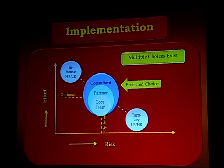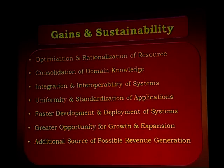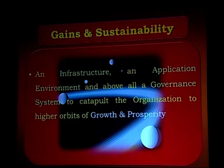The most important part of implementation: you should have your own core team, an implementation partner, and a consultant — that will give the most optimum result in respect of risk and effort. Once you have done that, you have achieved the goals of sustainability. You are in a position to optimize and rationalize resources, consolidate domain knowledge, integrate and interoperate your systems. You will have created an infrastructure, an application environment, and a governance system to send your organization to higher orbits of growth and prosperity.